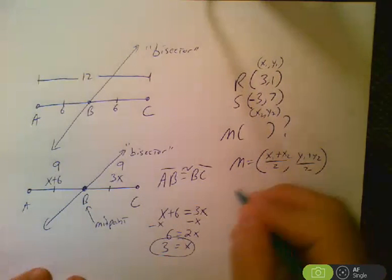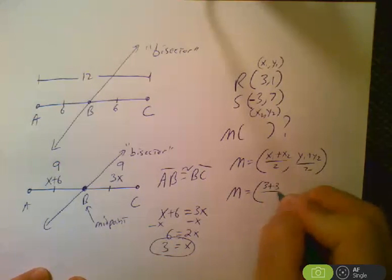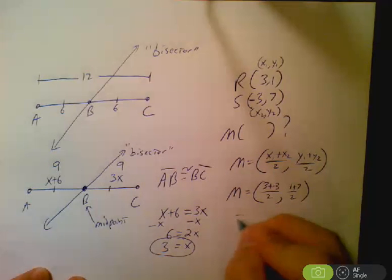So the midpoint here for this example would be 3 plus negative 3 over 2, 1 plus 7 over 2, and let's simplify that.